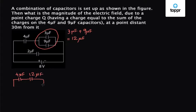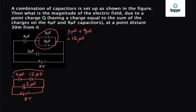And these two are in parallel with a 2 microfarad capacitor, connected by a voltage source of 8 volts across its ends. Now we can see that the 4 microfarad capacitor and 12 microfarad capacitor are in series, so their equivalent capacitance will come out to be 4 into 12 divided by 4 plus 12, which is equal to 4 into 12 divided by 16, which comes out to be 3 microfarad.